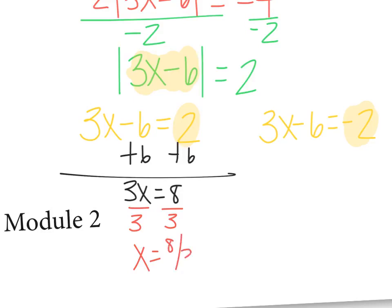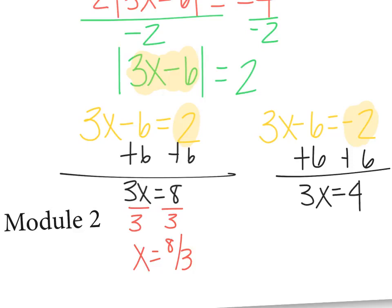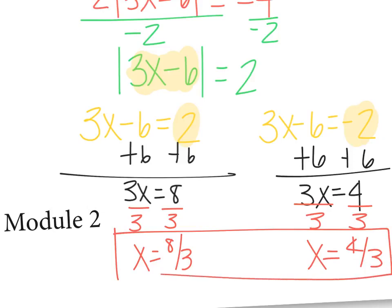There is a tendency for people to think that if one answer is 8 thirds, the other answer is negative 8 thirds — but it's not. You still have to work out the other one. For 3x minus 6 equals negative 2: add 6 to both sides, get 3x equals 4, divide by 3, and x equals 4 thirds. So my two answers are 8 thirds and 4 thirds.